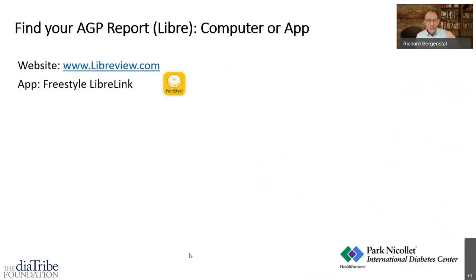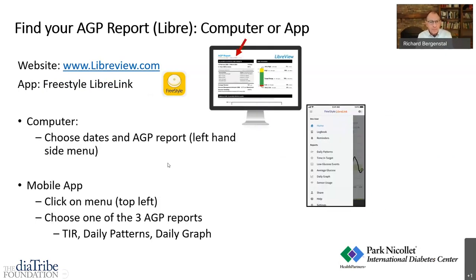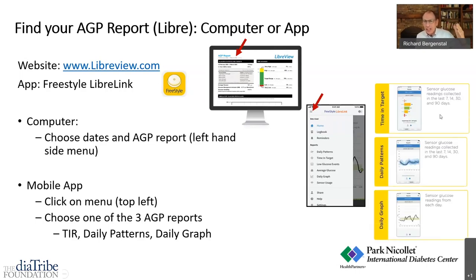If you're using the Libre system, go to LibreView.com — the Freestyle Libre link. Put that on your phone and get it set up. Then on your computer, select the AGP report — you'll find it just like the picture I showed you: the top panel, the next panel, and the next panel. On your mobile app, click the menu and up will come options: do you want to look at your time in range, your daily pattern profile, the average AGP profile, or every day's graph? There's the AGP — all the parts you can analyze to see how you're doing.